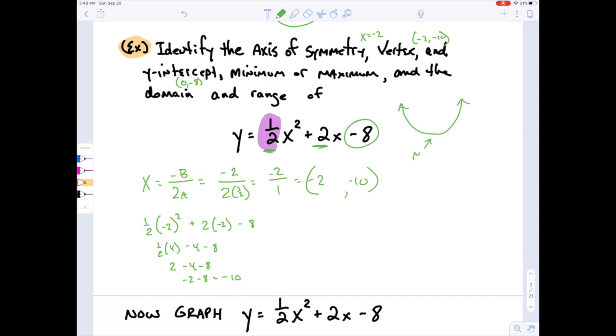That means the vertex is going to be at a minimum. So we're going to choose minimum. If we want to identify the minimum, we just use the vertex because that is the minimum.